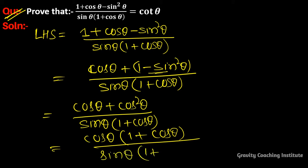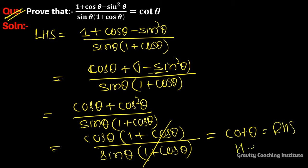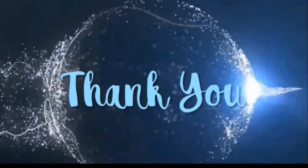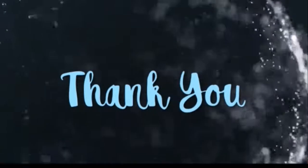Cancel (1 + cosθ) from numerator and denominator, leaving cosθ / sinθ = cotθ. So cotθ = RHS, hence proved. Good night and thank you.